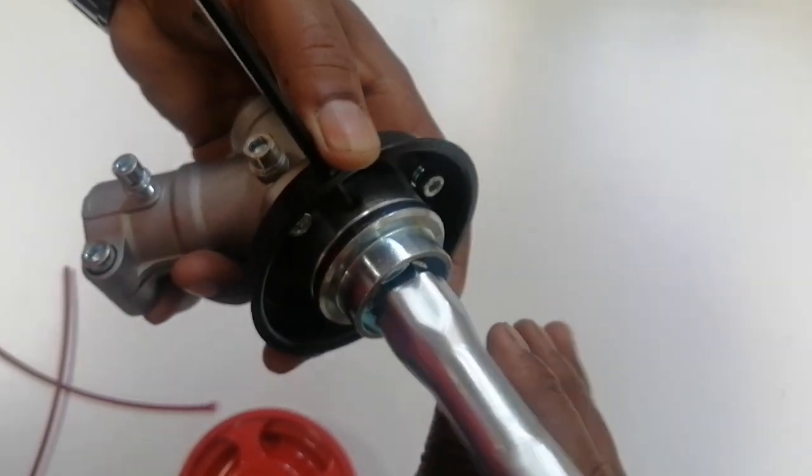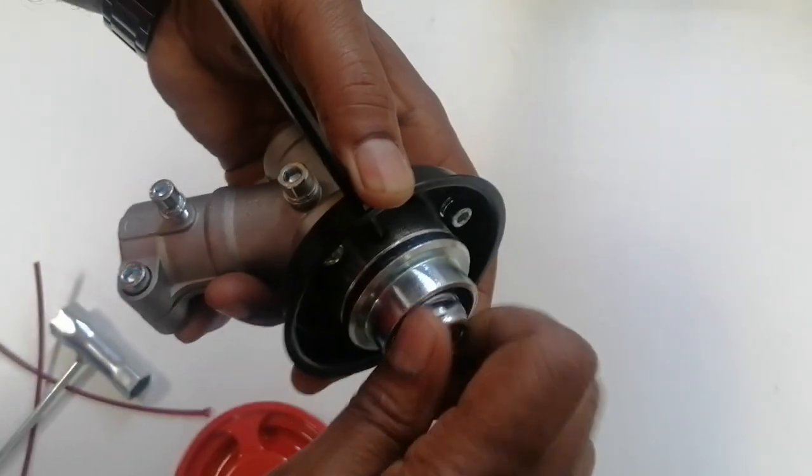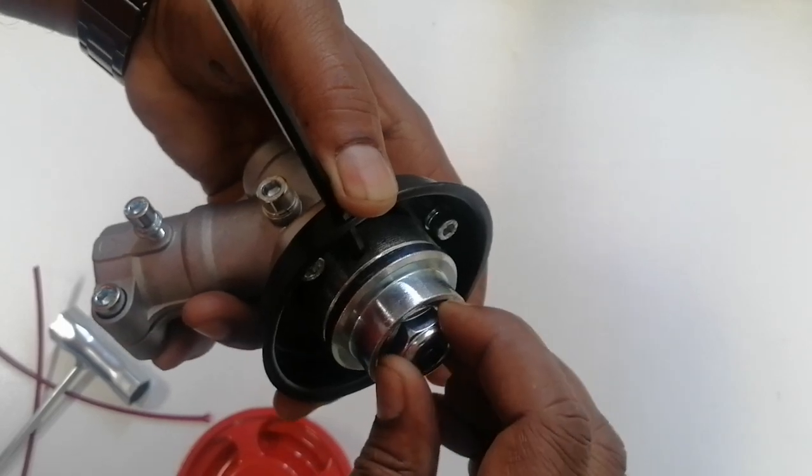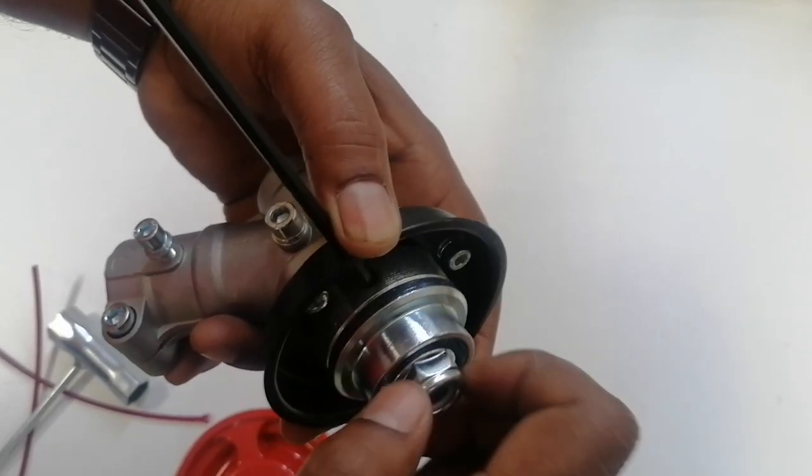This is a left-hand nut, so that means you have to tighten to loosen and loosen to tighten. It's a left-hand thread. So what we're going to do is remove the nut.